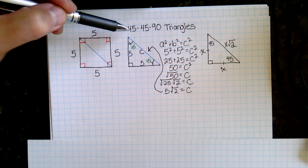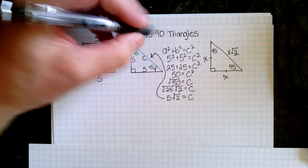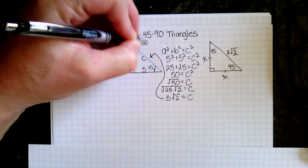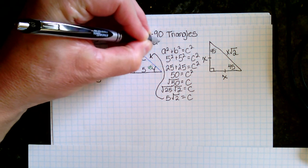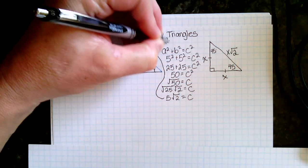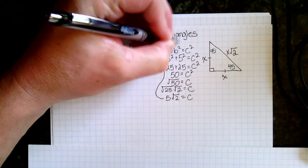So, this is called a 45-45-90 triangle, or it's called an isosceles right triangle.